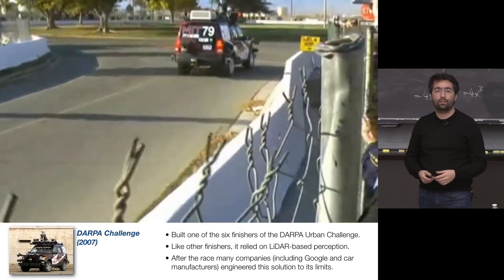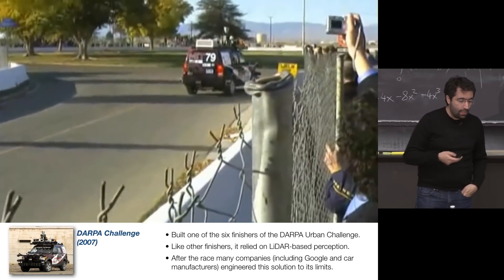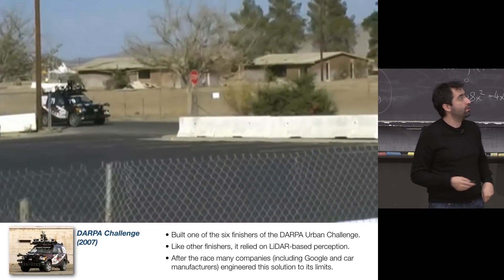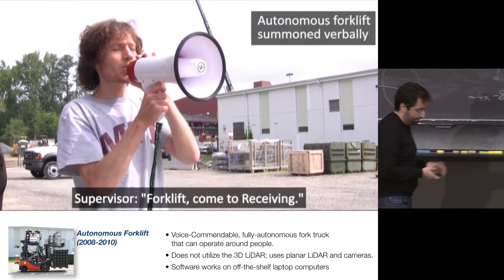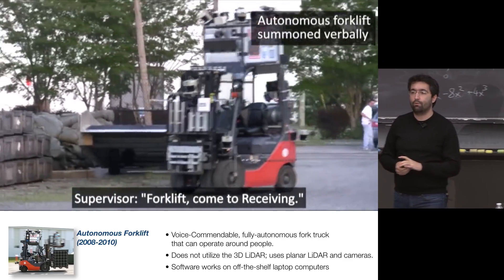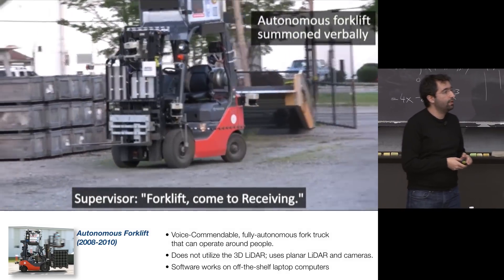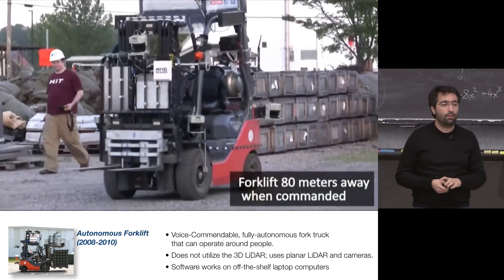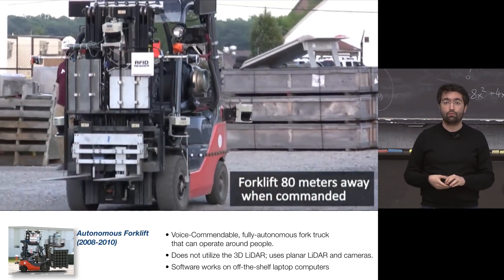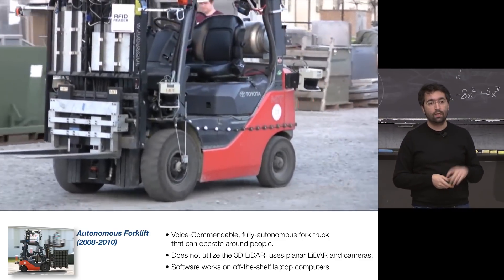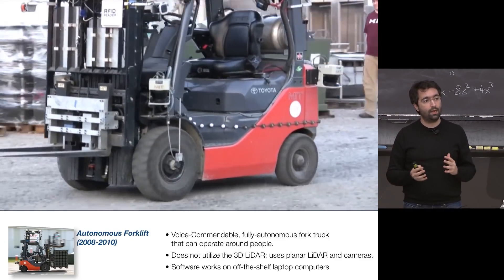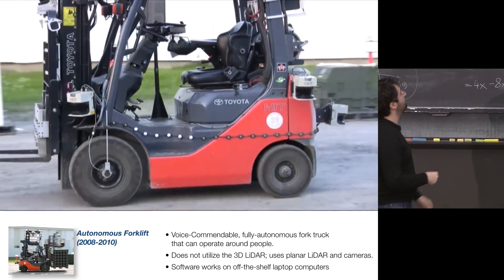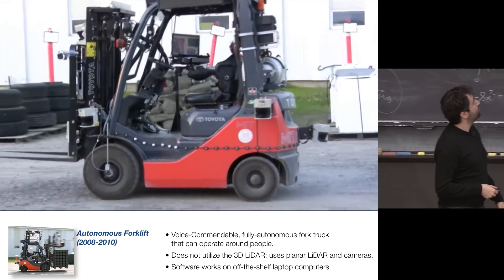A number of my friends went out and did their own careers. We stayed here at MIT and built a number of other autonomous vehicles. One thing we did — I was the motion planning lead — was this autonomous forklift. It was a forklift that you could literally take a megaphone and speak to. You could say 'forklift, go to XYZ' and it would go to that location. Here it's trying to go to receiving, which is an area where trucks pull up with pallets.